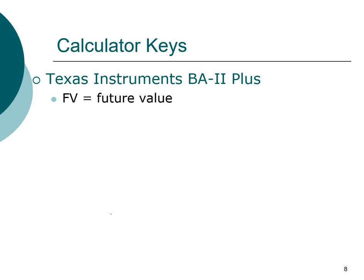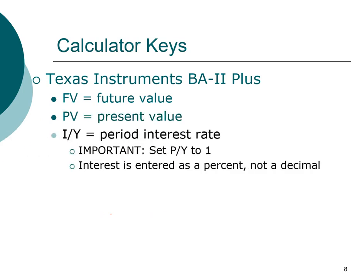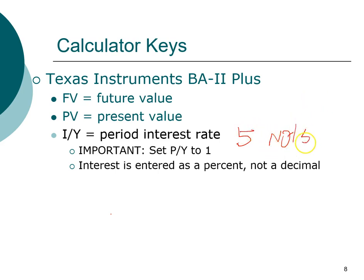You'll probably be very familiar with these by the end of this chapter, if not by the end of the next. FV stands for future value, PV stands for present value. This register is the period interest rate — interest per period. An important reminder: interest is entered as a percent, not a decimal. For example, if the interest rate is 5% per year, you enter the number 5, not 0.05, because the calculator recognizes the entry as a percentage.